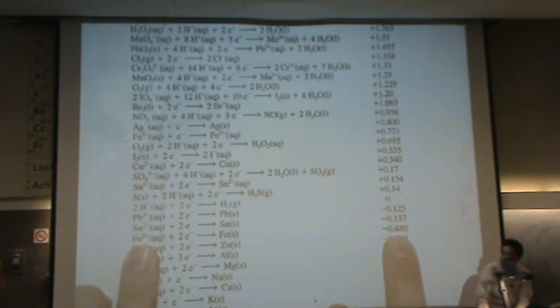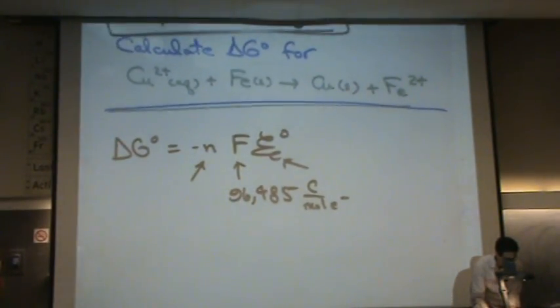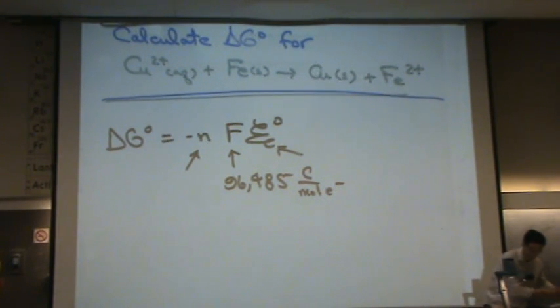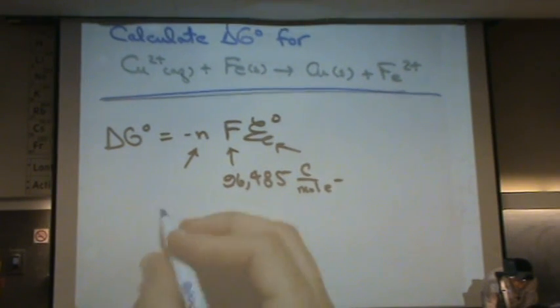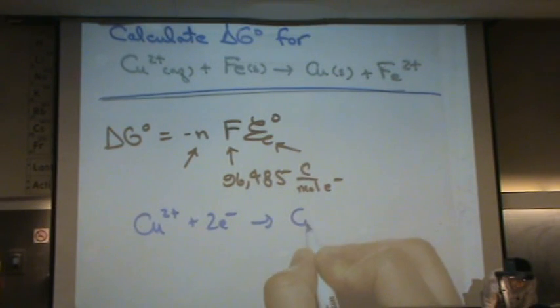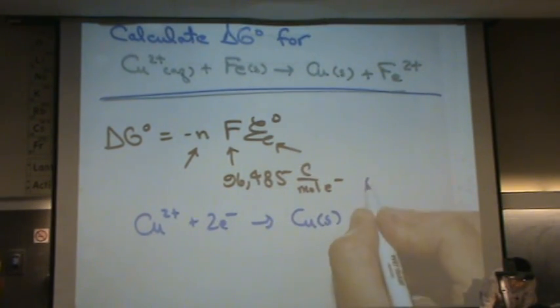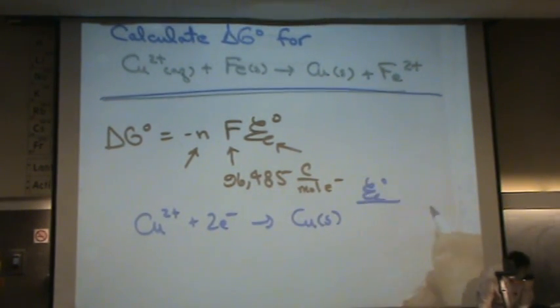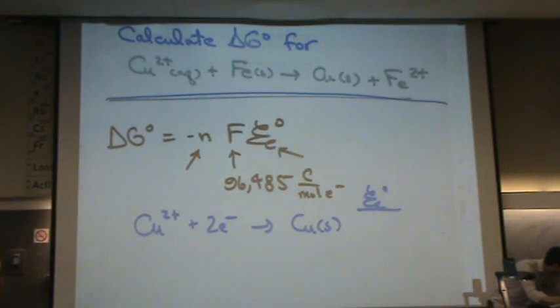And as a reduction it's negative 0.44. Okay, so I'm going to write those two down. I'll copy it if you couldn't see what I was writing earlier. So the copper two plus plus two electrons goes to copper solid. That's what I have. I want to write my E standard straight from the table is plus 0.34.